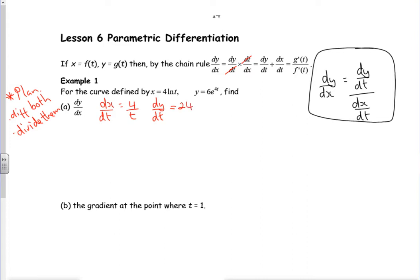Because you differentiate the power, stick it at the front, so that's 6, 12, 24 e to the 4t. So dy/dx is dy/dt which is 24 e to the 4t all divided by four over t. Well, the 24 and the four cancel down, the divide by t flips.